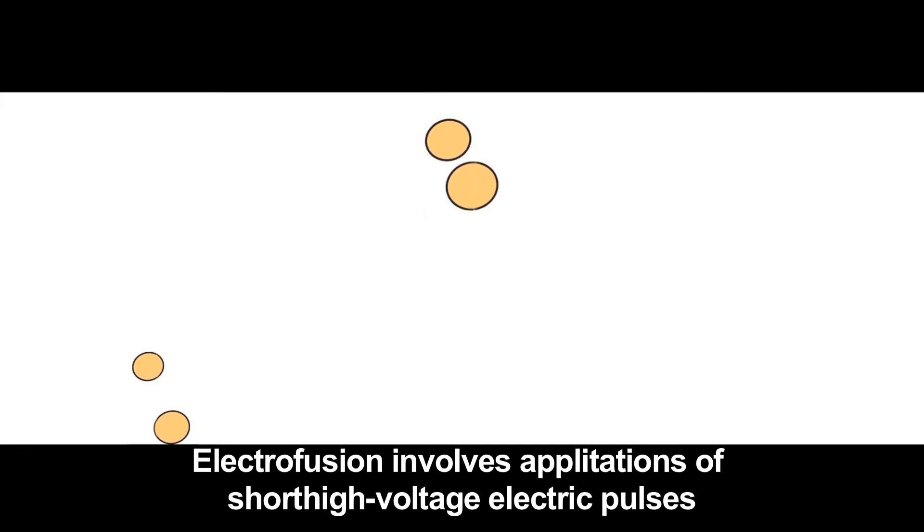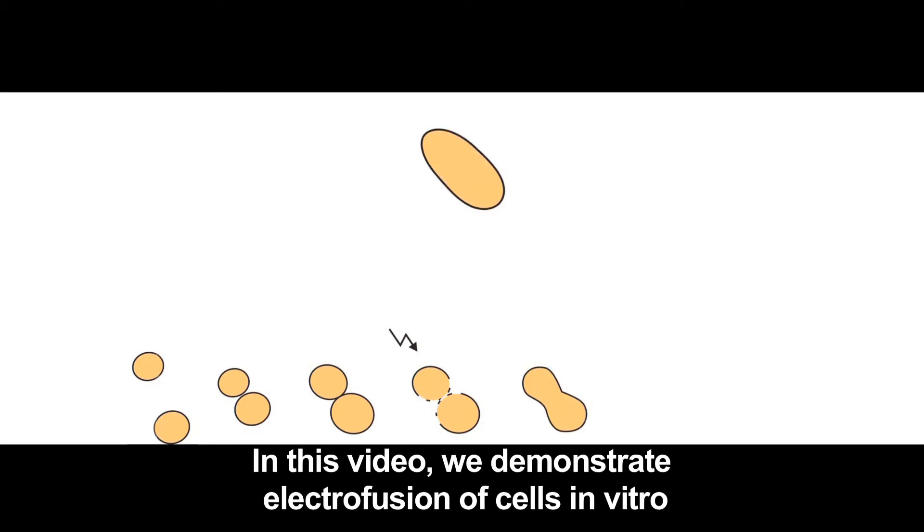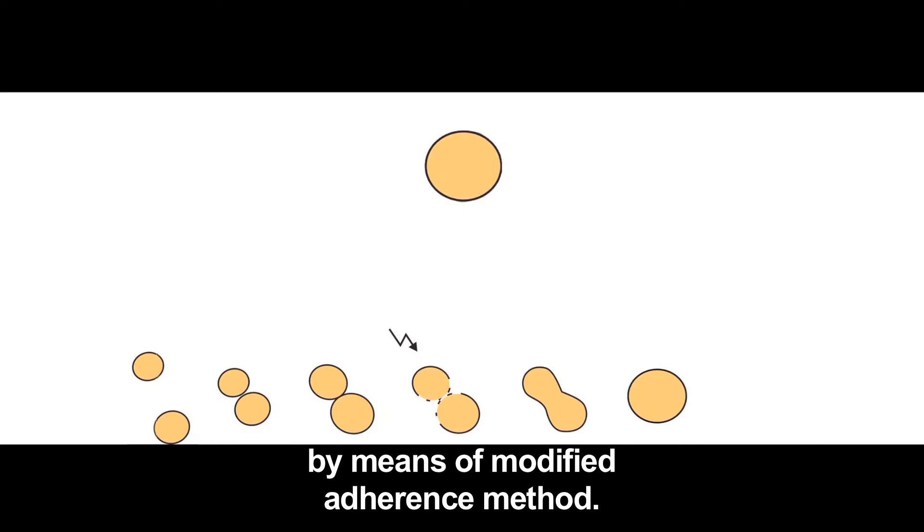Electrofusion involves application of short high-voltage electric pulses to cells in close contact. In this video, we demonstrate electrofusion of cells in vitro by means of modified adherence method.